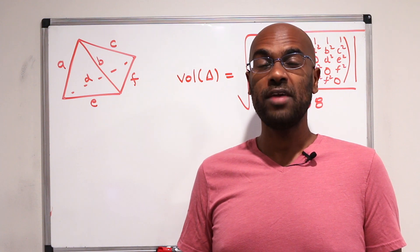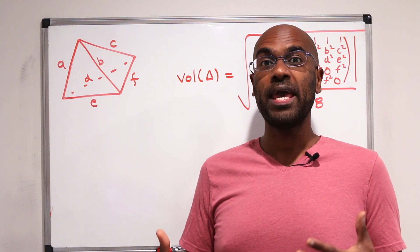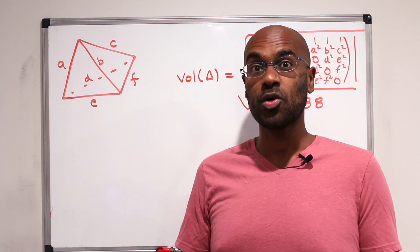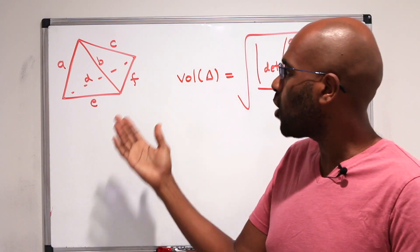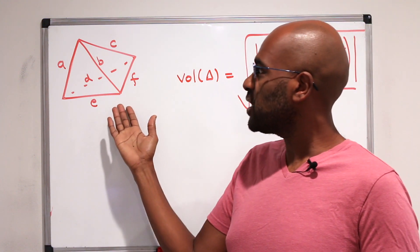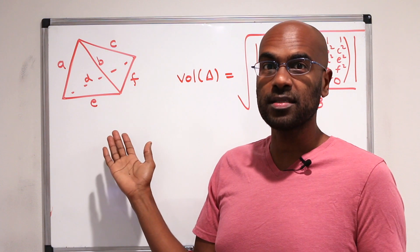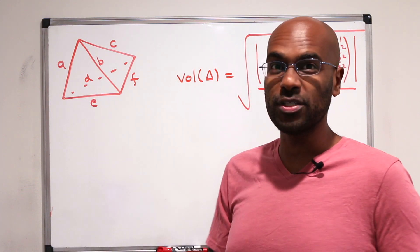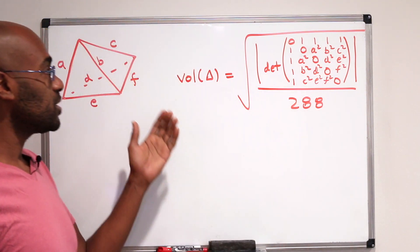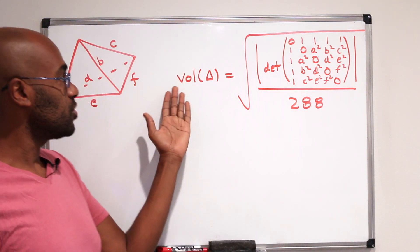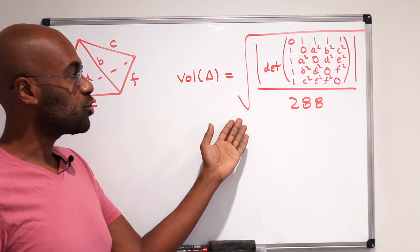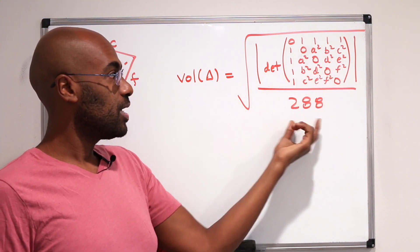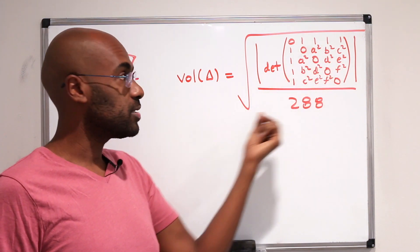Heron's formula provides a way for calculating the area of a triangle directly from its side lengths only. But what about the volume of a tetrahedron if you're given its side lengths? Today we're going to develop a formula for the volume of such a tetrahedron. The volume is the square root of the absolute value of a determinant divided by 288.